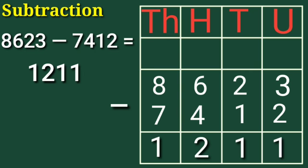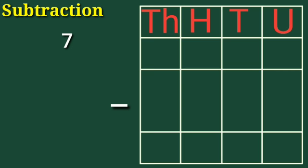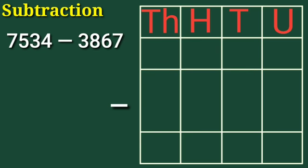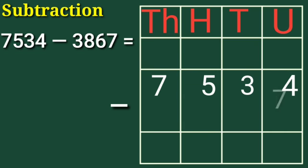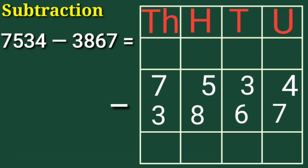Now children, let's take one more example: 7,534 minus 3,867. Let's draw a table. Write U for units, T for tens, H for hundreds, and TH for thousands. For 7,534: 4 is under the units column, 5 is under the hundreds column, 7 is under the thousands column. For 3,867: 7 is under units, 6 is under tens, 8 is under hundreds, 3 is under thousands.